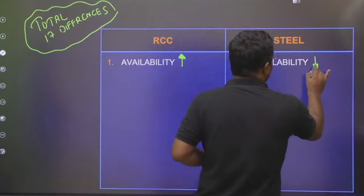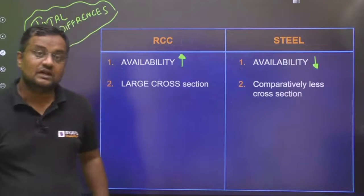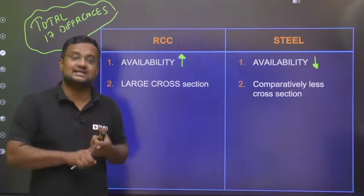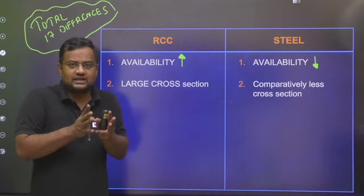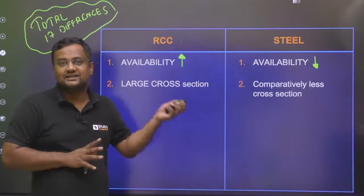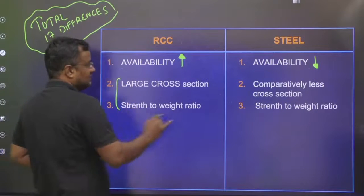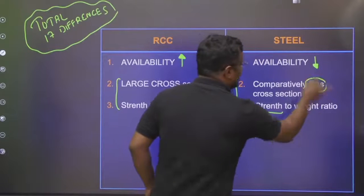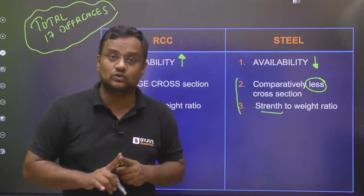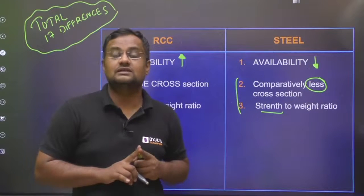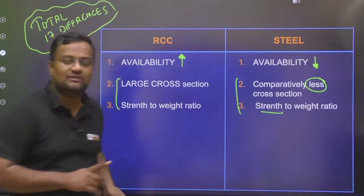The second difference is cross-section size. A large cross-section is required for RCC for the same design load, whereas comparatively a lesser cross-section area is required for steel, because of its high strength-to-weight ratio. Since strength is high, the area required is lesser. Among all civil engineering materials, steel has the highest strength-to-weight ratio, so of course the area required will be lesser.